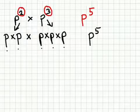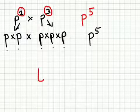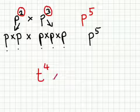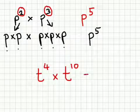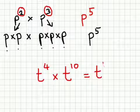So the easy way of dealing with any indices question that you see, when you have something like t to the power 4 times by t to the power 10, the answer is t to the power 14,